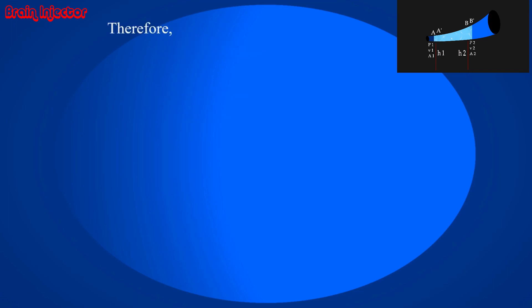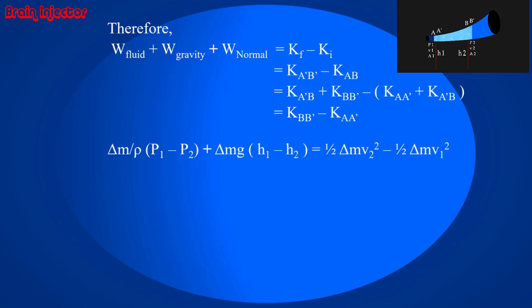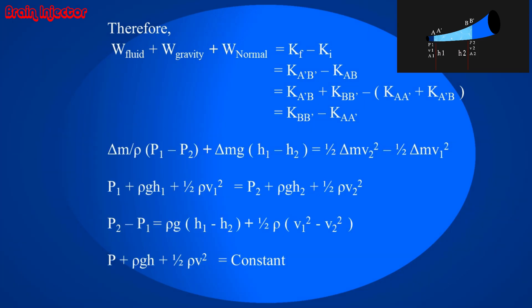As we already know, the Bernoulli's equation works on the conservation of energy, which is the sum of all the work done equals change in kinetic energy. Which finally gives us the most important equation of all time: that is pressure energy per unit volume plus potential energy per unit volume plus kinetic energy per unit volume is constant. That is, if we have constant height and the velocity of the fluid increases, then the pressure on that side decreases and vice versa.